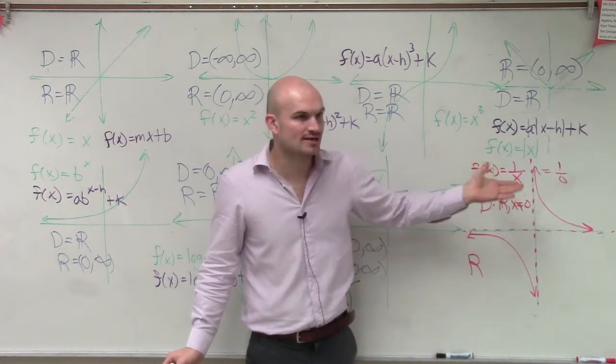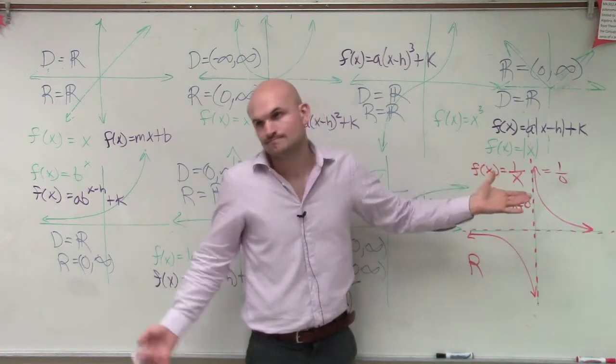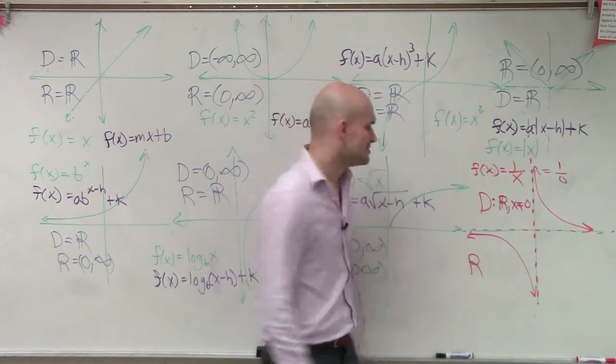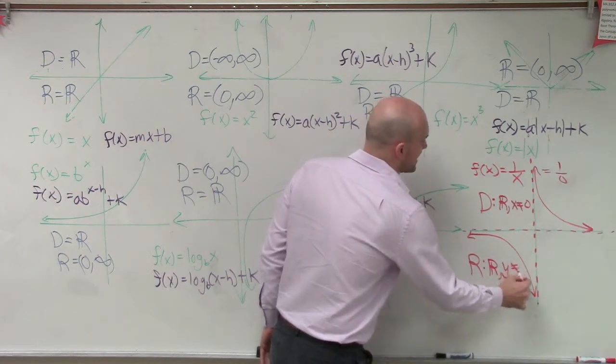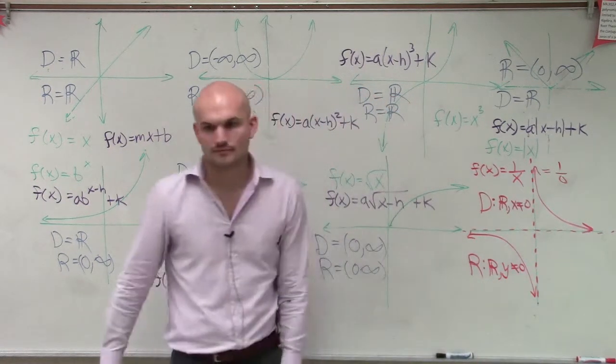Try to take the number 1, divide it by a number, to get 0. It's just not going to happen. So our range is all real numbers, except y cannot equal 0.